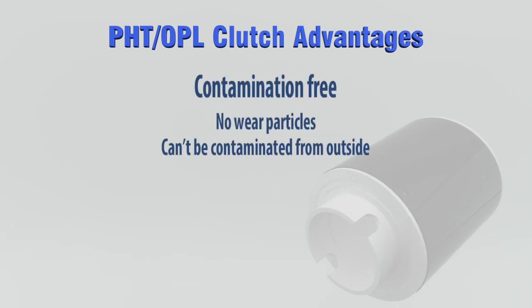All PHT OPL clutches and brakes are magnetic. Unlike friction devices, particles are not generated, so they cannot contaminate equipment. PHT units can also be sealed to prevent contamination. OPL units are inherently sealed.